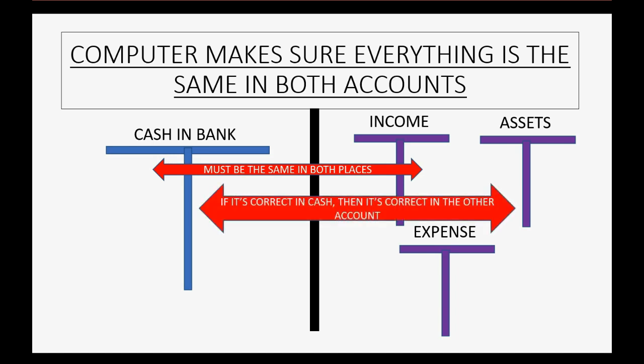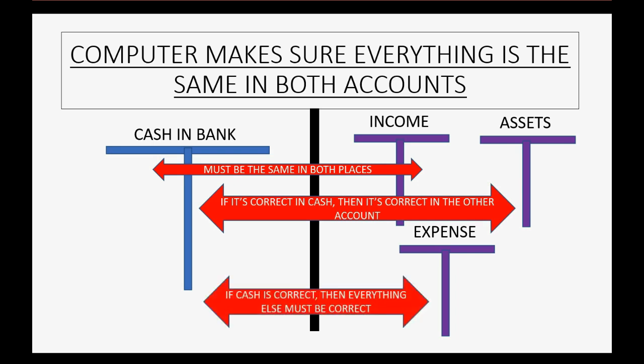So we know if it's a strictly cash company that every transaction changes cash and some other account in the chart of accounts. The computer makes sure that it's the same in both accounts — we only enter the transaction once. Therefore, if it's correct in the cash account, then it's correct in the other account. And if cash is correct, then everything else in the company's chart of accounts must be correct.